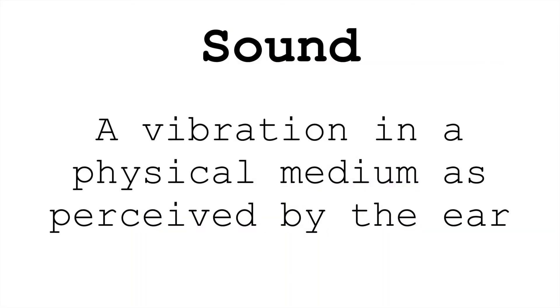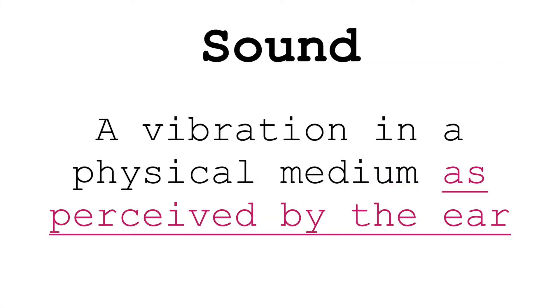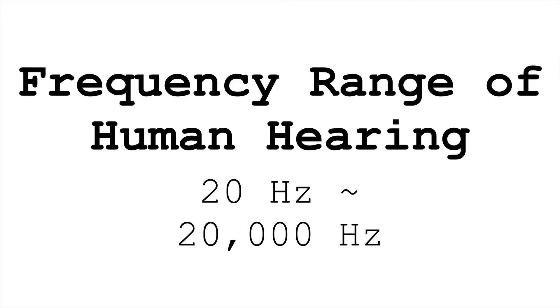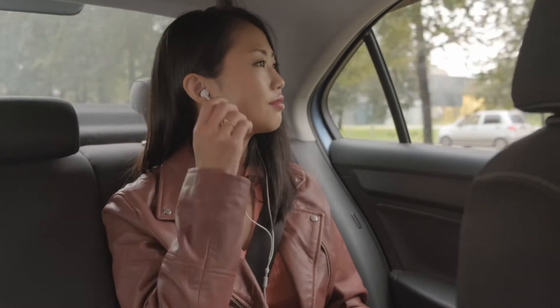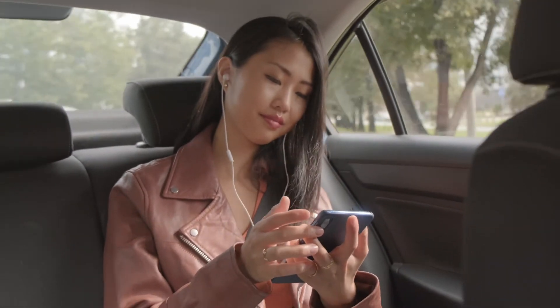Finally, the definition specifically mentions perception by the ear. This is important. There are lots of vibrations occurring around us that we cannot hear. One reason is that our ears can only perceive a limited range of frequencies. We can generally hear sounds from 20 vibrations per second to 20,000 vibrations per second, with some variation — young people tending to hear higher, and us losing the upper range of these frequencies as we get older.